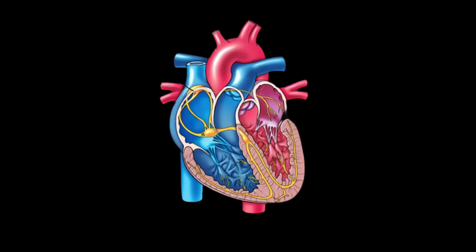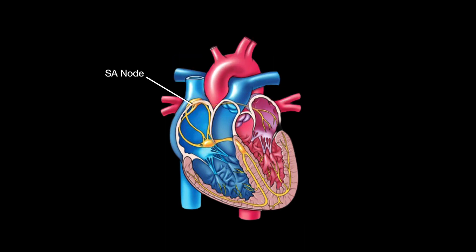We just finished the structures of the heart and now I want to explain the cardiac conduction system. This system is a network of nodes, cells, and signals that controls your heartbeat. Each time your heart beats, electrical signals travel through your heart, causing different parts to expand and contract. This will be covered again in detail in our next videos. The cardiac conduction system consists of the following components. The SA node, located in the right atrium near the opening of the superior vena cava, is the natural pacemaker of the heart — it initiates all heartbeats and determines heart rate.